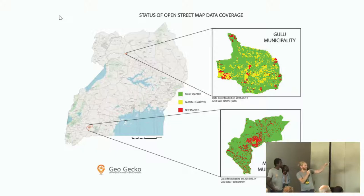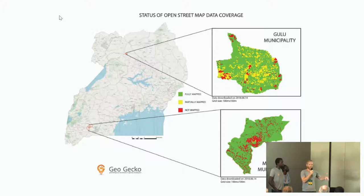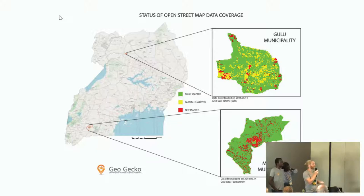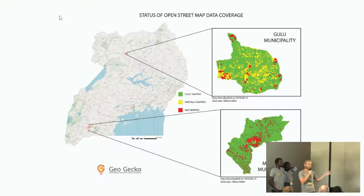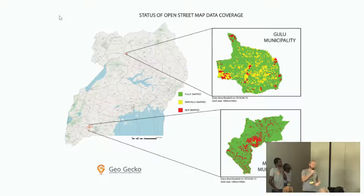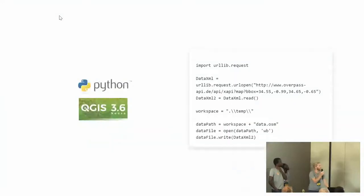The green areas are fully mapped, but that also means they could just be areas where there's nothing — it's not necessarily because someone has digitalized something there. The yellow areas are where someone had a Wednesday evening and decided to map one house, then left the area. And the red areas are not mapped at all. That was the example Desire showed before. When data is there, it's easy to export with Python, and yeah, there's data everywhere and it's cool.